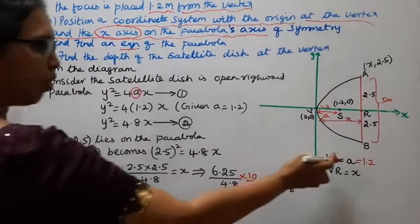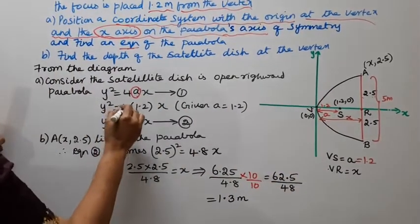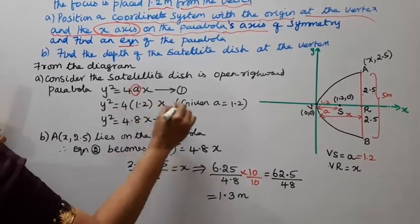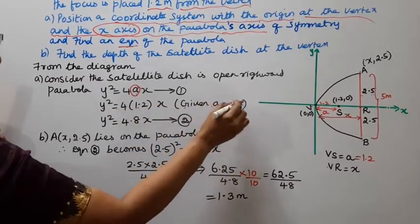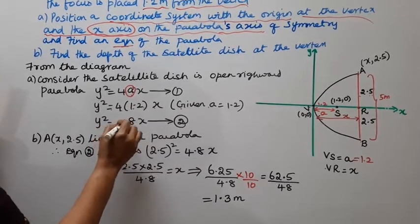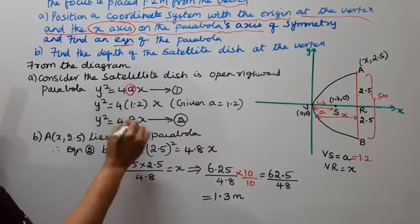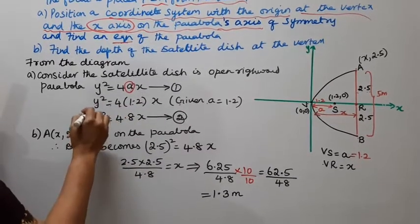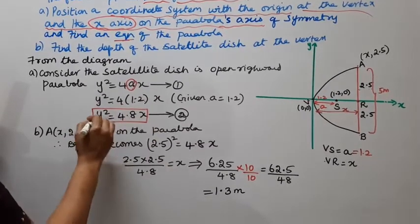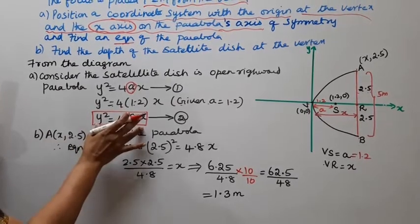A is equal to 1.2. So y² is equal to 4 into 1.2 into x. Given a is equal to 1.2, 4 into 1.2 is equal to 4.8. Therefore y² is equal to 4.8x. This is the equation of the parabola.